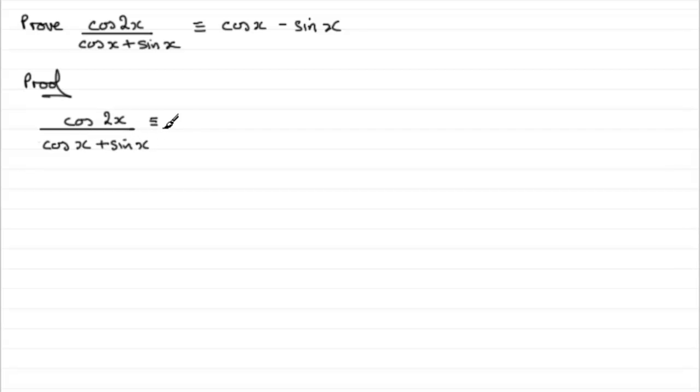Cos2x - well, that identity cos2x has got several versions to it. In formula books you'll most probably see it as cos2a, but cos2x then is identical to cos squared x minus sine squared x.